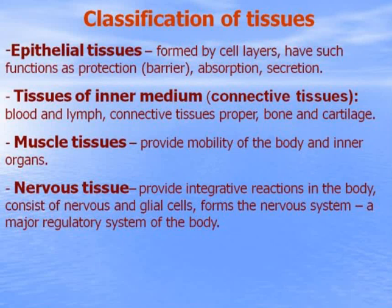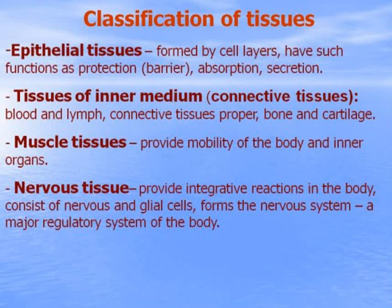There are four main types of tissues in the body. Epithelial tissues are formed by cell layers and have functions such as protection, barrier, absorption, and secretion. Tissues of the inner medium, or connective tissues, include blood, lymph, connective tissue proper, bone, and cartilage. Muscle tissues provide mobility of the body and inner organs, and nervous tissue provides integrative reactions, consisting of nervous and glial cells forming the nervous system — a major regulatory system of the body.